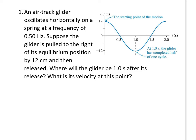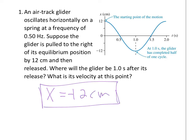The glider is pulled to the right of its equilibrium position by 12 centimeters and then released. Where will the glider be one second after release, and what is the velocity at that point? Looking directly at the graph: at one second, the position equals negative 12 centimeters. For velocity at that point — it's at maximum amplitude, the object is changing direction, and the slope of the position graph is zero — so velocity equals zero meters per second.